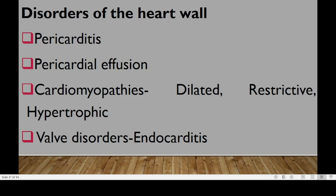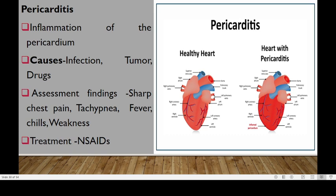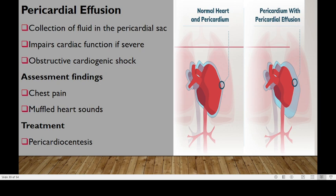After looking at conditions affecting the arteries, it's time to look at conditions affecting the heart wall, including pericarditis. Pericarditis is generally characterized by inflammation of the pericardium because of infection, tumor, or use of some drugs. The patient will present with sharp pain, increased respiratory cycles, fever, chills, and weakness. We normally treat this condition using NSAIDs. Next we have pericardial effusion, which will result from collection of fluid in the pericardial sac. This will impair cardiac function if severe, and we have cases where obstructive cardiogenic shock can result. Patients present with chest pain and muffled heart sounds, and this condition is treated using pericardial synthesis.